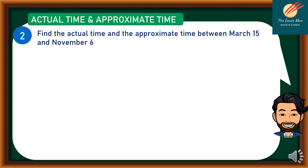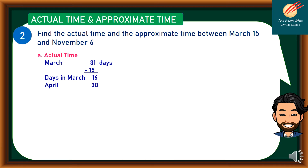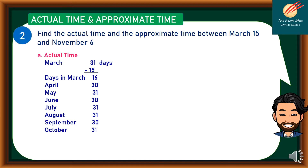Let's have example number 2. Find the Actual Time and the Approximate Time between March 15 and November 6. For our Actual Time: March has 31 days, but we subtract 15, so we have 16 days only for March. Next, April 30, May 31, June 30, July 31, August 31, September 30, and finally October 31. We also have 6 days in November. Adding all of this, we have 236 days.